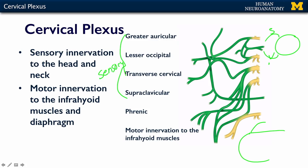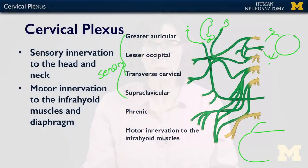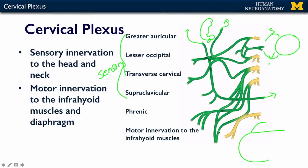Starting at the top and working through: we first have the greater auricular nerve, which comes up just in front of your ear. Below that is the lesser occipital, which innervates the skin behind your ear, over your mastoid process. The transverse cervical goes in front of the neck and innervates the anterior neck. The supraclavicular nerves come out and innervate the skin above your clavicle — supraclavicular, over the clavicle.